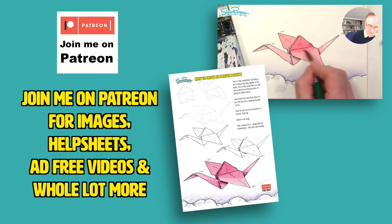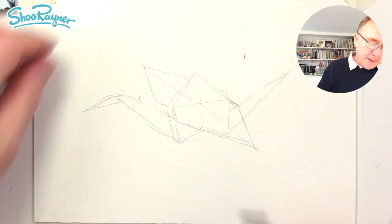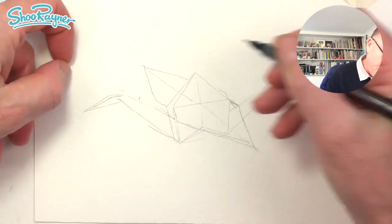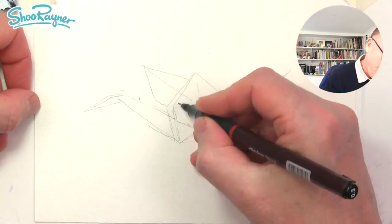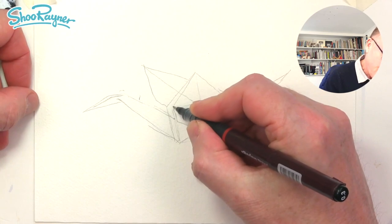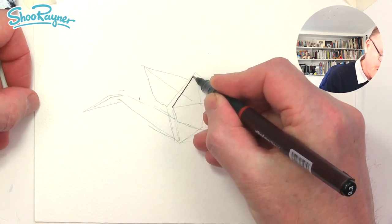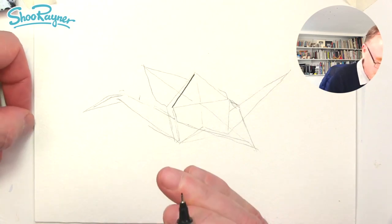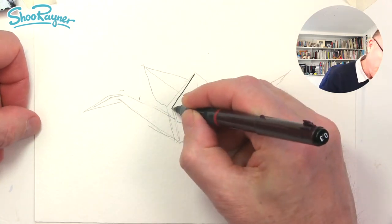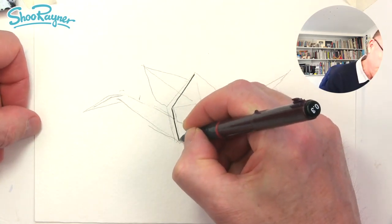Now the difficulty with drawing origami is sort of showing that there are folds, so yeah, pay attention, okay? We're going to draw this line up here but not right up to the top, and we're going to draw this line coming down there but not right down to the bottom either and not going quite into the corner there.